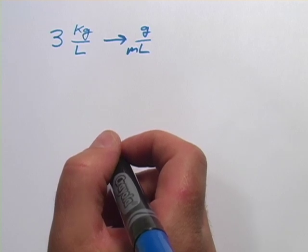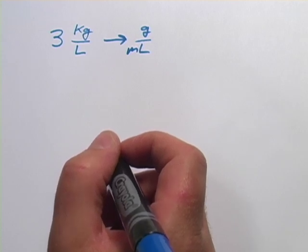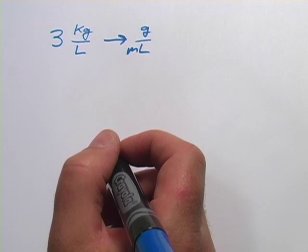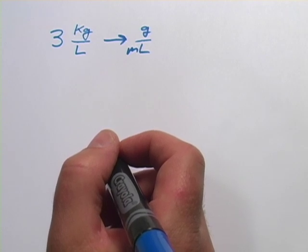We've been doing some problems converting between units in the metric system, between the English system and the metric system, and you're used to using scale factors to do that.